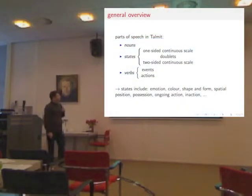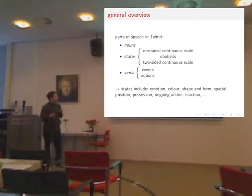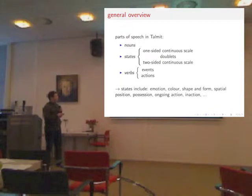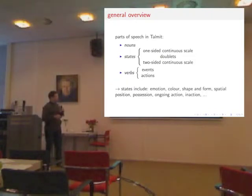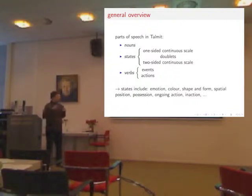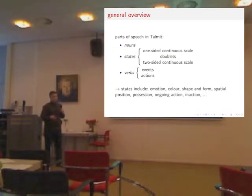What I did first was separate states out as a new part of speech. So parts of speech in Talmud are now states and verbs. Verbs only describe inventive actions, and states describe anything which is in some way constant in time — a larger category than you might expect. States include emotional states, any appearance, color, shape, form, spatial position, ongoing action (present progressive is essentially a state), and inaction is a state too.